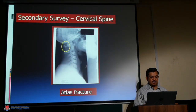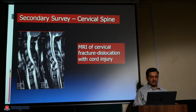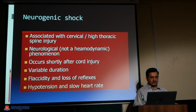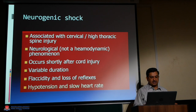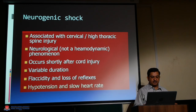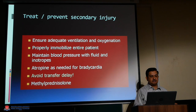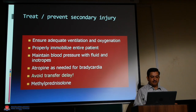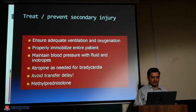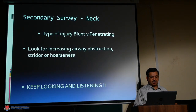Cervical spine secondary survey includes assessing for atlas fractures and MRI for fracture-dislocation with cord injury. Neurogenic shock associated with cervical or high thoracic spine injury is a neurological, not a hemodynamic, phenomenon occurring shortly after cord injury, with variable duration, flaccidity, loss of reflexes, hypotension, and slow heart rate. Treatment: prevent secondary injury, ensure adequate ventilation and oxygenation, properly immobilize the patient, maintain blood pressure with fluids and inotropes, administer atropine, avoid transfer delay, and consider methylprednisolone.